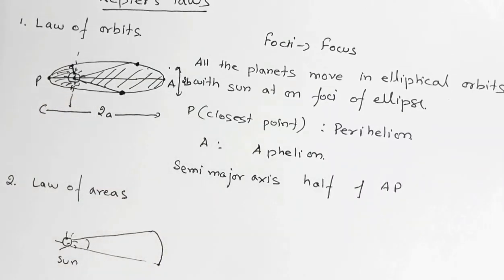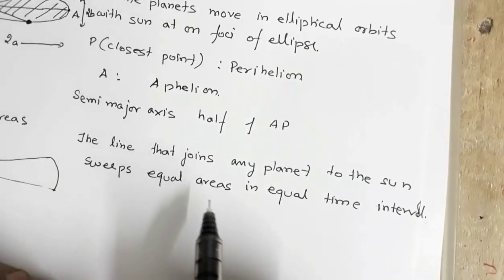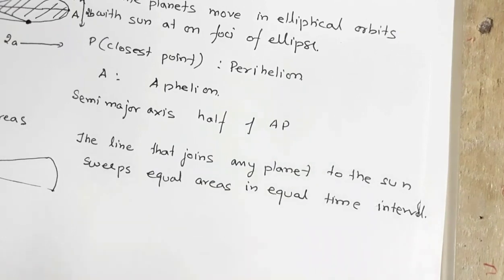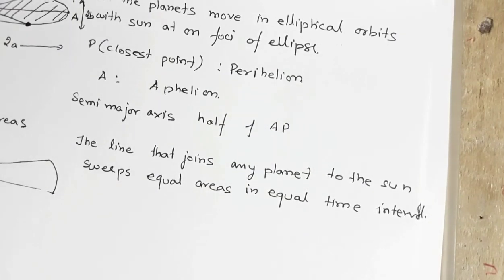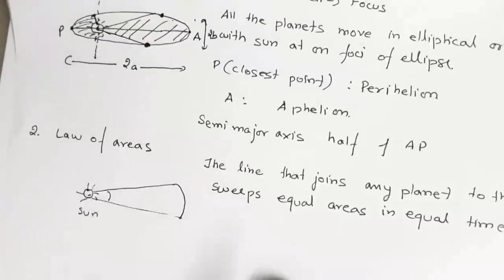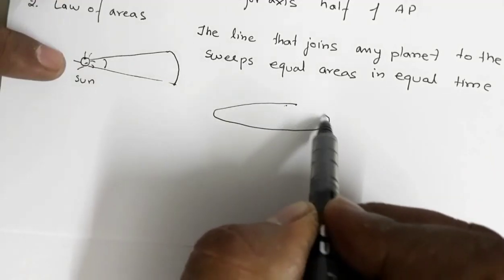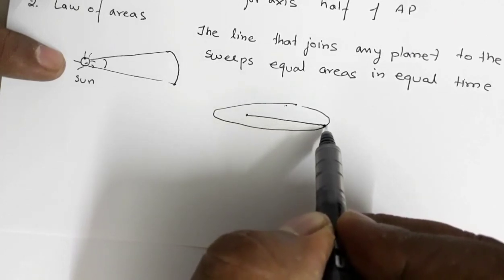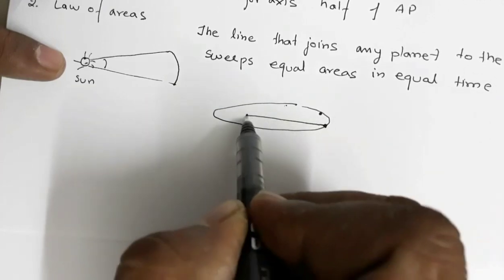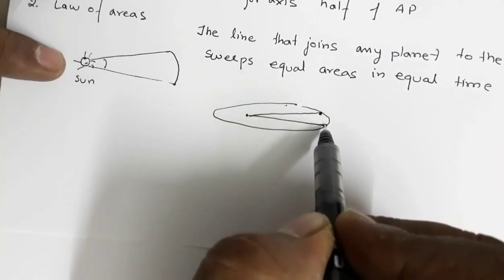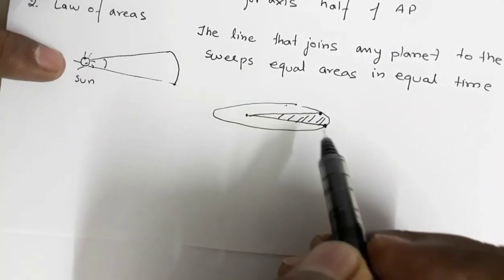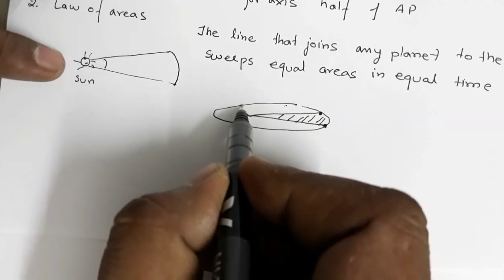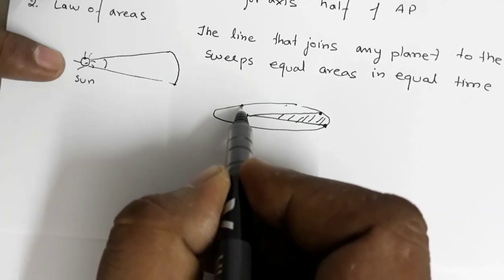The statement is: the line connecting any planet to the sun sweeps equal areas in equal time intervals. To understand this further, consider this elliptical path in which the planet is moving with the sun here. In a particular time interval, the planet moves from one point to another — the line sweeps a certain area. In the same time interval, the planet moves between two other points and the line sweeps another area.